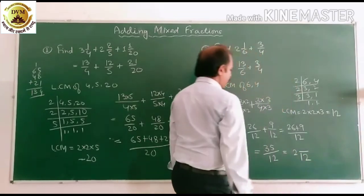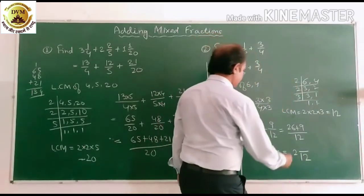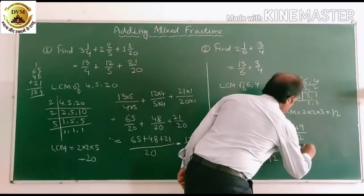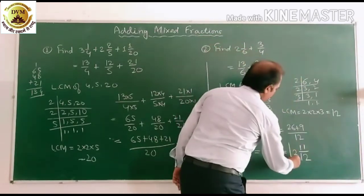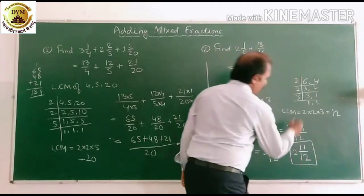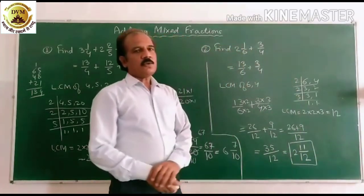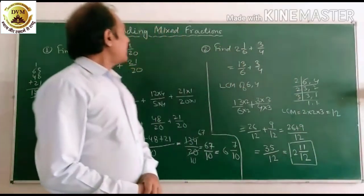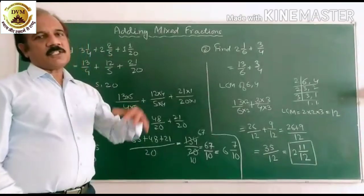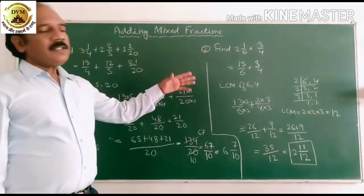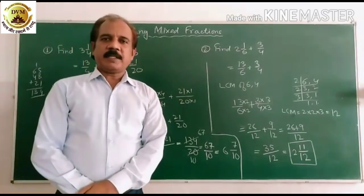12 is 24, so 2 11/12. So in this way we can add the mixed fraction, first changing into common fraction, then again like fraction, then we can add. Thank you.